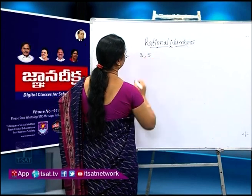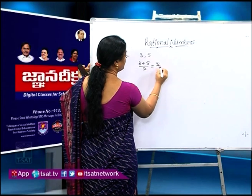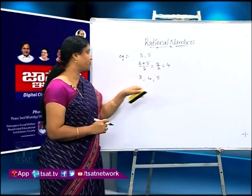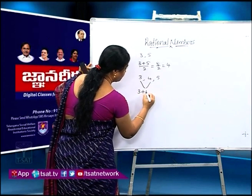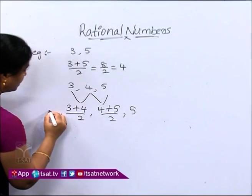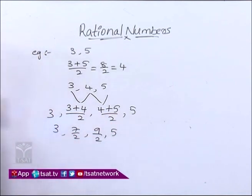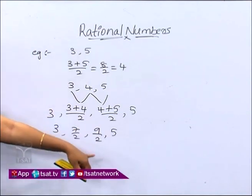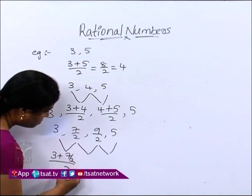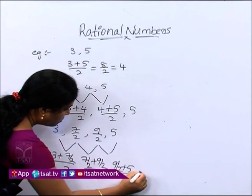How to find 4 and other numbers? By using the average method. Average is the sum of numbers divided by the number of numbers. Example: insert rational numbers between 3 and 5. Average = (3 + 5) / 2 = 8/2 = 4. So 3, 4, 5 — 4 is the number between 3 and 5. To find more, again use the same process: (3 + 4) / 2 = 7/2, and (4 + 5) / 2 = 9/2. So 7/2 and 9/2 are also between 3 and 5. Repeating this process, we can find more rational numbers between 3 and 5.